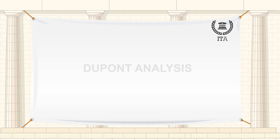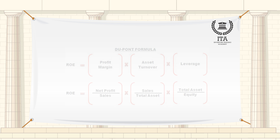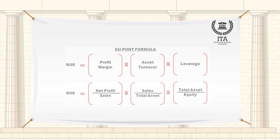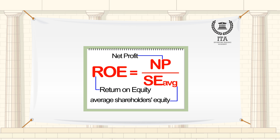The DuPont Analysis, also called the DuPont Model, is a financial ratio based on the return on equity ratio that is used to analyze a company's ability to increase its return on equity. In other words, this model breaks down the return on equity ratio to explain how companies can increase their return for investors.